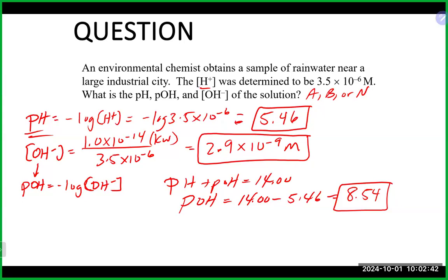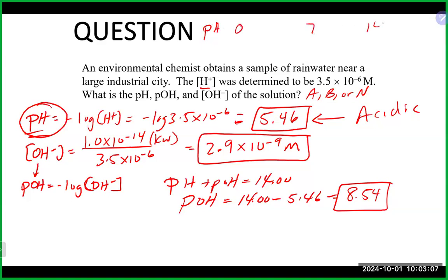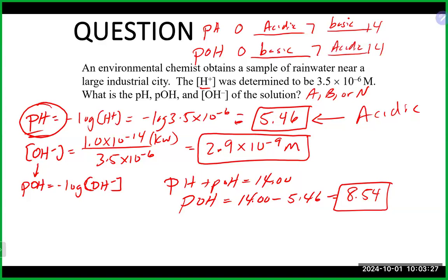This solution is acidic — a pH of 5.46 is below 7. When asked if it's acidic, basic, or neutral, there's only one answer, so don't give all answers for the same solution. Always look at the pH scale, since that's the scale most people have in their head. The POH scale also runs to 14, but opposite — below 7 on the POH scale is basic, and above 7 is acidic.